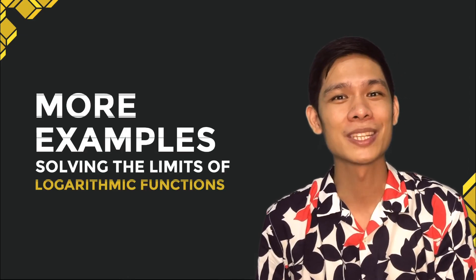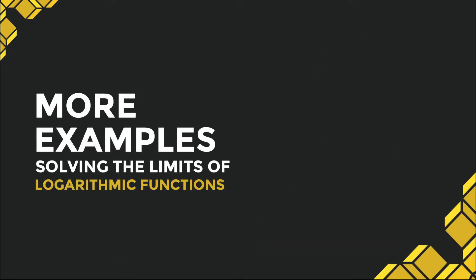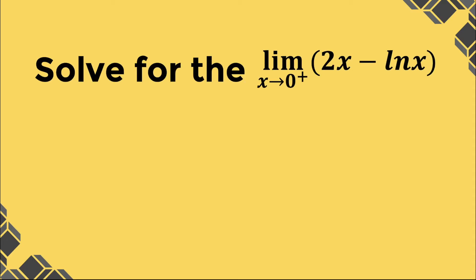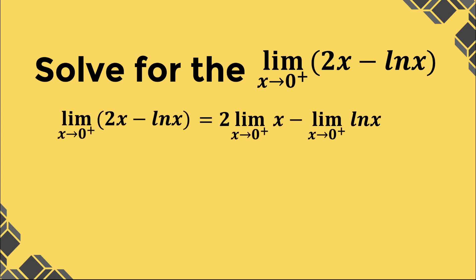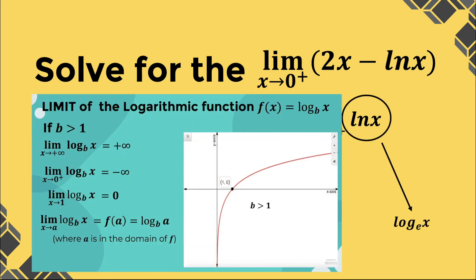Now let's try solving for the limits of logarithmic functions. Solving for the limit of 2x minus ln of x as x approaches 0 from the right, we can separate the terms using limit laws and then evaluate the limits separately. 2 times the limit of x as x approaches 0 from the right would be equivalent to 2 times 0, which is equal to 0. Since ln of x is equal to logarithm base e of x, the limit as x approaches 0 from the right is equal to negative infinity.